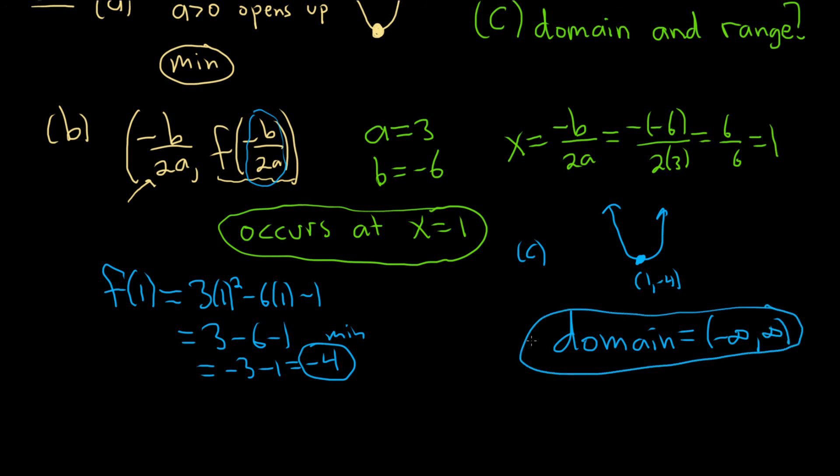The range is all the possible y values. So the smallest y value is the minimum, so negative 4. So it'll be negative 4 to infinity. You go from the bottom up, so negative 4 to infinity. That's going to be our range.